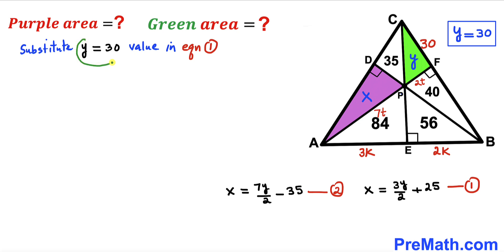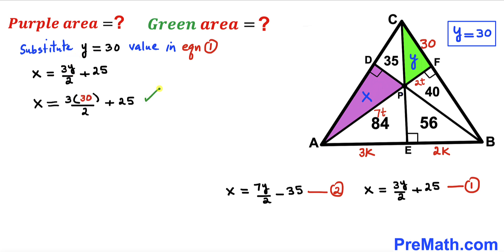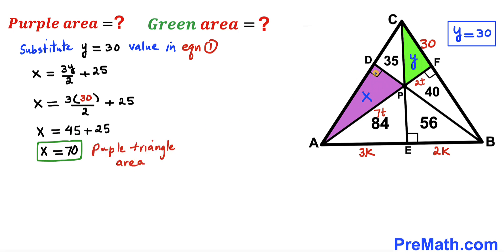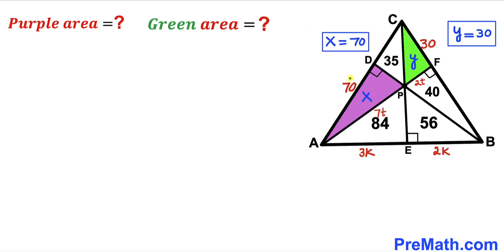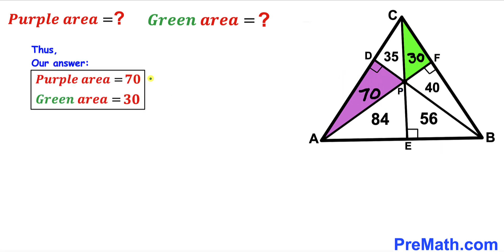Now we substitute y = 30 into Equation 1: x = 3(30)/2 + 25 = 45 + 25 = 70. Since x represents the purple triangle area, the purple triangle area is 70 square units. So the purple area is 70 and the green area is 30.